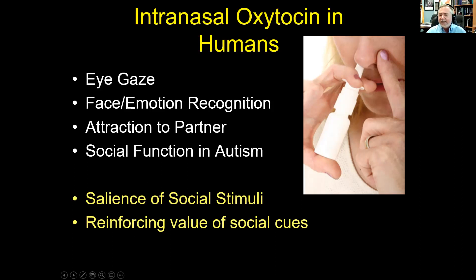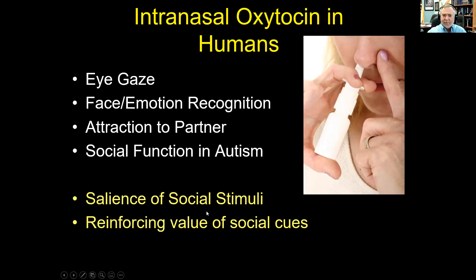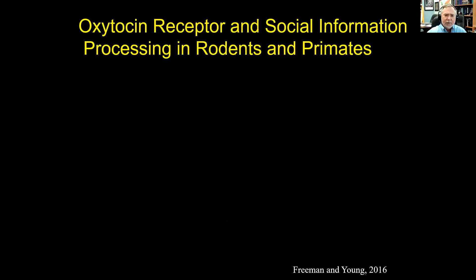Some effects have been seen repeatedly: it increases eye contact, increases the ability to read the emotions of others, improves face recognition and emotion recognition, and increases attraction to one's partner. There are also a number of studies showing that intranasal oxytocin may have some positive effects in rescuing social deficits in autism. Whatever effect it's having, I think it's because of the fundamental processes oxytocin affects — the salience and reinforcing value of social stimuli. If you have a disorder like autism where social stimuli are not salient or reinforcing, tapping into oxytocin's properties might have some positive impact.